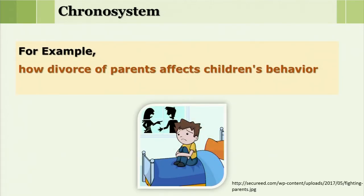The chronosystem refers to changes and transitions taking place in society. For example, the divorce rate nowadays is very high — that is a shift occurring at society level that affects the behavior of the child. Another example is technology: technology has entered our lives and society, but society has not successfully implemented measures to protect children. The Blue Whale game, where children committed suicide, is an example of how technological explosion in the chronosystem affects the child.